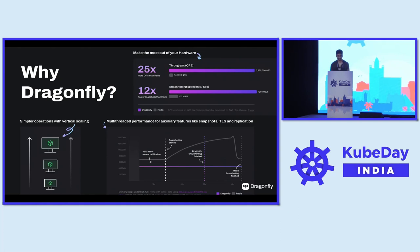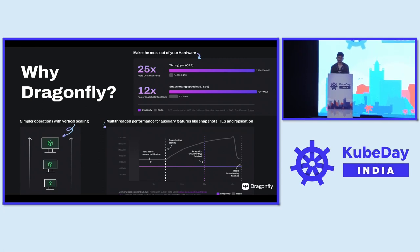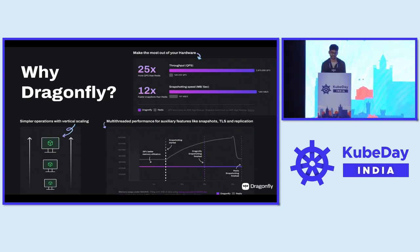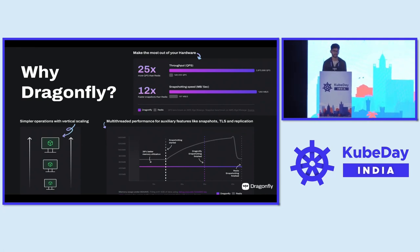Why Dragonfly? Dragonfly essentially scales vertically better. With Redis and a lot of other alternatives, after a specific QPS, you have to horizontally scale. With Dragonfly, we try to avoid that by making efficient use of cores, all the modern algorithms, and modern hardware. On the same instance, you would get significantly better performance out of Dragonfly than you would get with Redis.